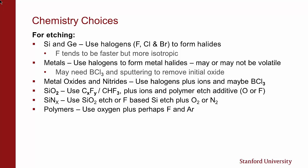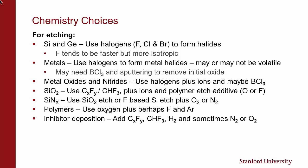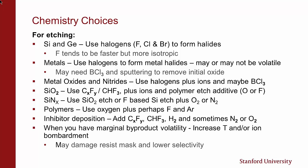Argon is used when we want to add more ion bombardment. For inhibitive deposition, we use fluorocarbons — CHF3, hydrogen — and sometimes nitrogen or oxygen can help with the inhibitor deposition; we're looking at controlling sidewalls and anisotropic etching. When we have marginal byproduct volatility, we often increase the temperature and also increase ion bombardment. The downside is that increased temperature and ion bombardment can damage the photoresist and lower selectivity.